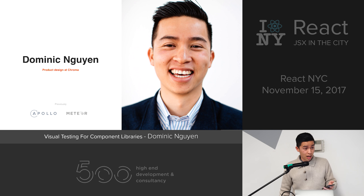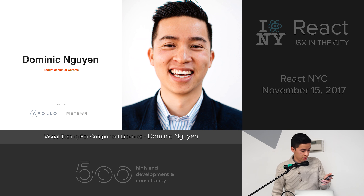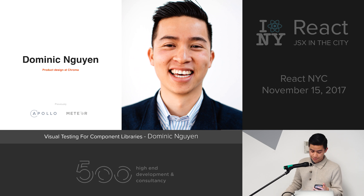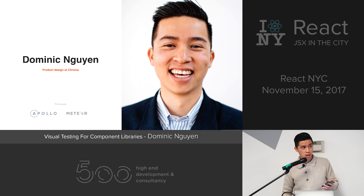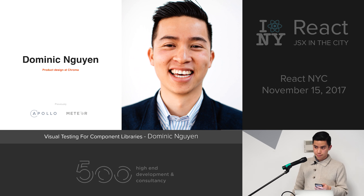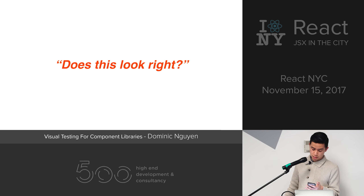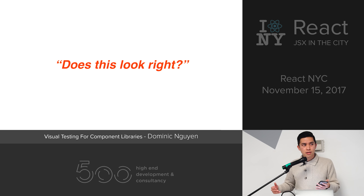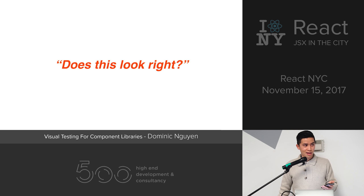A little bit about me: I'm a product designer and founder at Chroma. We built a tool that helps developers prevent UI bugs in React. Previously, I worked at Meteor in SF and helped launch the Apollo GraphQL project. But after a decade of designing and building apps, I always hit the same problem — best summed up in one question: does this look right?